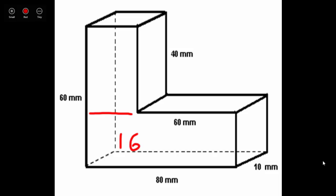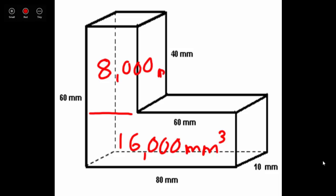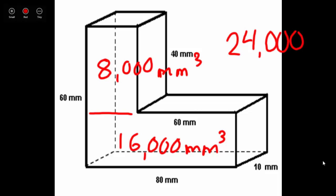We found that the bottom rectangular prism has a volume of 16,000 cubic millimeters, and the top rectangular prism has a volume of 8,000 cubic millimeters. We need to find the total volume of the whole irregular figure, so we add them together: 16,000 plus 8,000. Since both are in the thousands, 16 plus 8 equals 24, giving us 24,000 cubic millimeters as the total volume of the irregular figure.